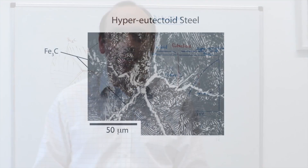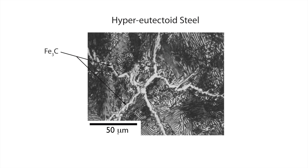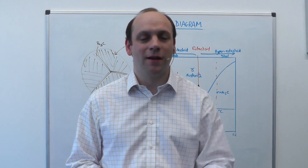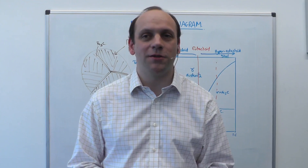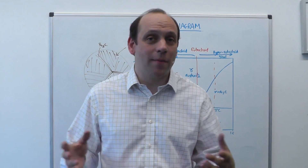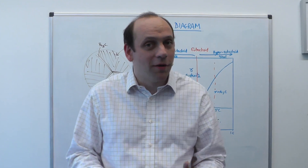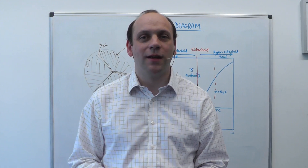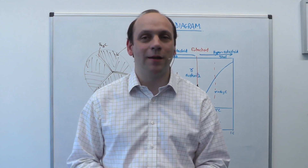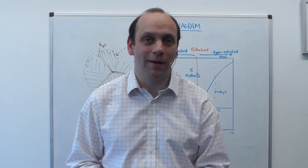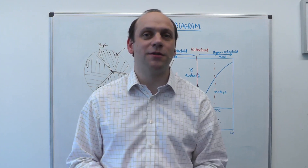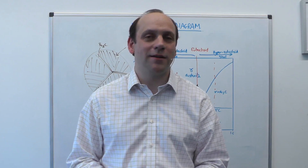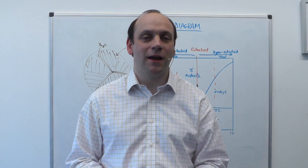The micrograph of a hyper-eutectoid steel shows narrow grain boundary films of cementite and then pearlite in between. Those are essentially the three types of steels: hypo-eutectoid, eutectoid, and hyper-eutectoid. Hypo-eutectoid steels have less carbon than the eutectoid composition; hyper-eutectoid steels have more. In fact, most steels are hypo-eutectoid. In the next lecture segment we'll combine this with TTT diagrams and think about martensites and non-equilibrium transformations. At equilibrium it's just like the eutectic — except instead of a liquid transforming to two solid phases, it's a eutectoid where austenite transforms into two solid phases, alpha and Fe3C.